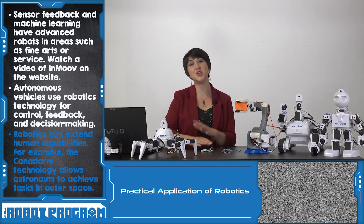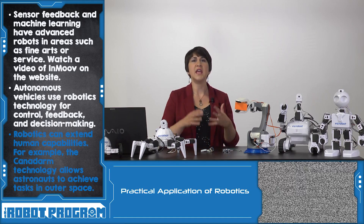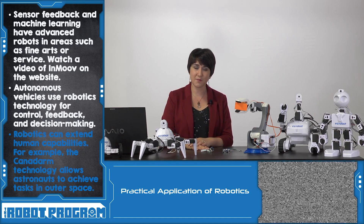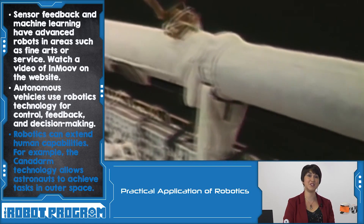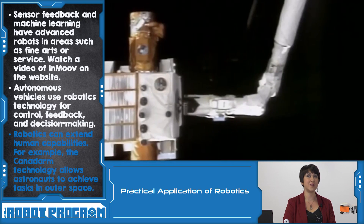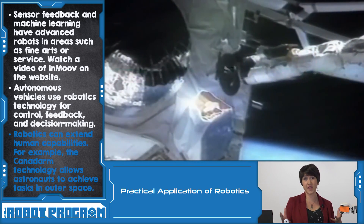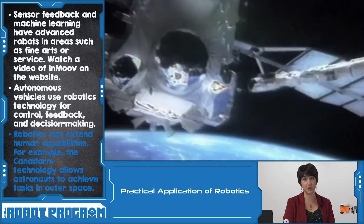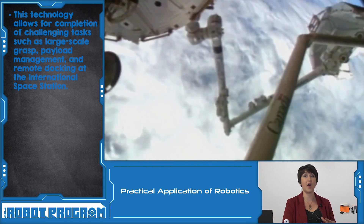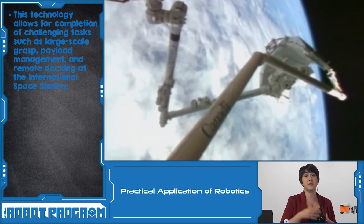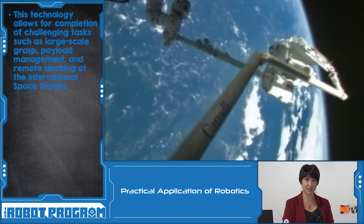Robotics can be used to extend human capabilities — including grabbing things, holding things, even things beyond human strength. A great example of this is the Canadarm, also called the Space Station Remote Manipulator System. It allows crew members of the International Space Station to achieve tasks on a large scale that normal humans wouldn't be able to do, especially in the harsh environment of space. The Canadarm was capable of grasping huge payloads, manipulating different items, and even docking the Space Shuttle when it came to the International Space Station.